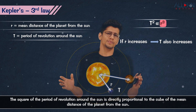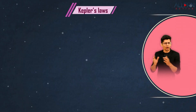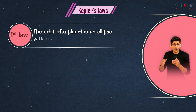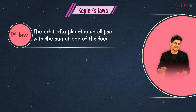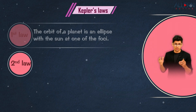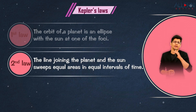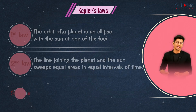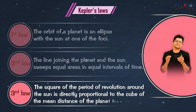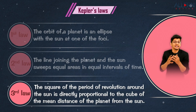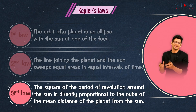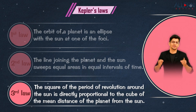Let's quickly revise all three laws. First law: the orbit of a planet is an ellipse with the Sun at one of the foci. Second law: the line joining the planet and the Sun sweeps equal areas in equal intervals of time. Third law: the square of the period of revolution around the Sun is directly proportional to the cube of the mean distance of the planet from the Sun.